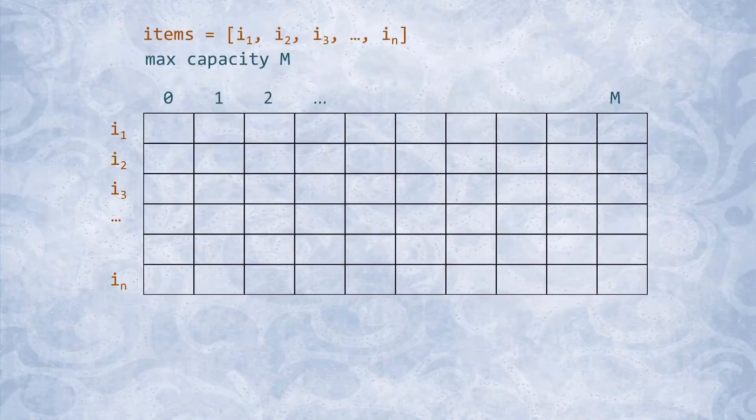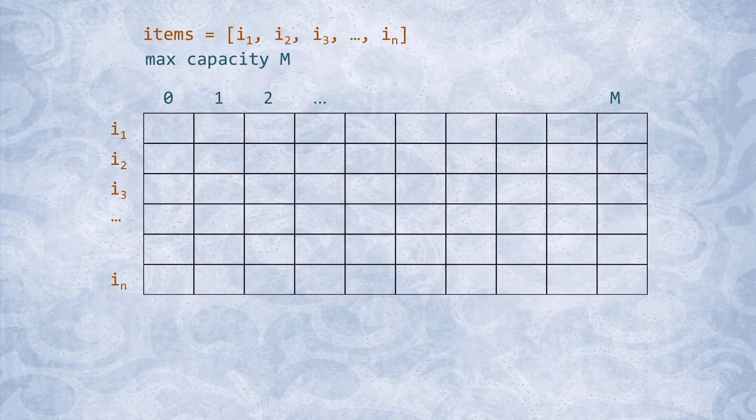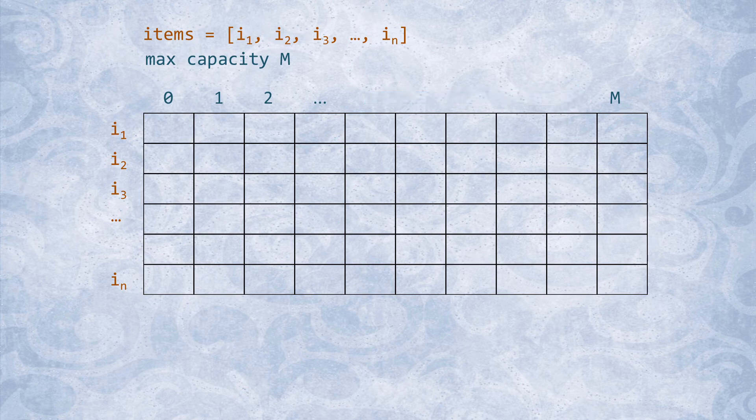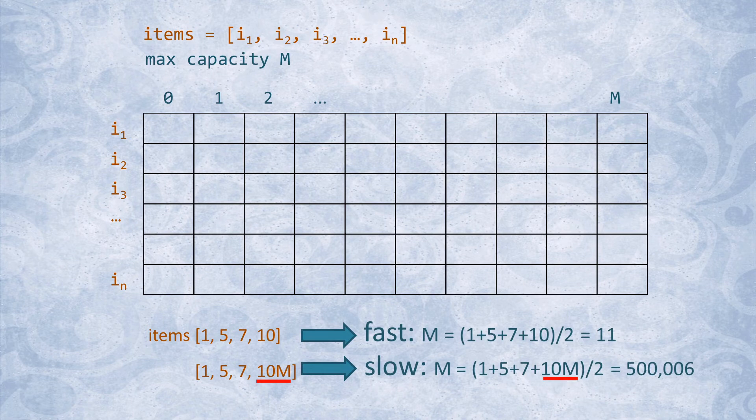But I would like to mention that the dynamic programming solution constructs a two-dimensional table, the size of which are proportional to the number of items in the array and the maximum capacity value. This means that two inputs of the same size array could have very different running times just based on the values in the array. These types of algorithms are said to have weakly polynomial running time. Even though the constructed table is two-dimensional, this is not a quadratic algorithm.